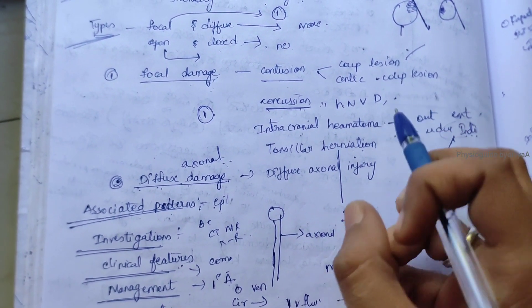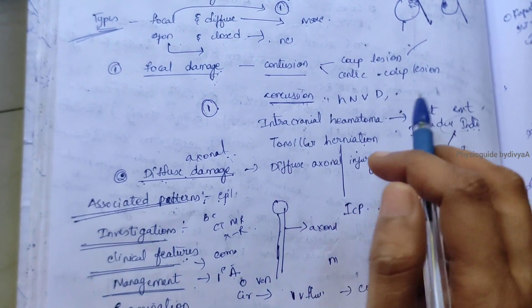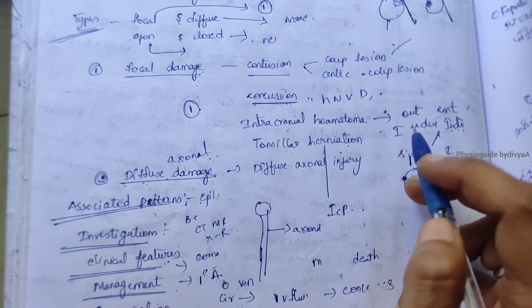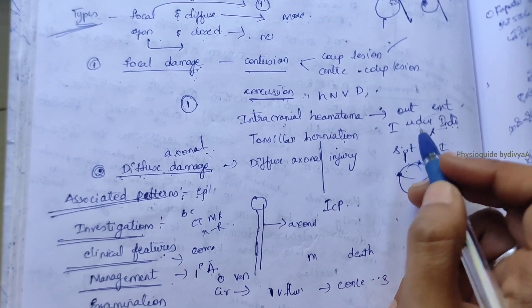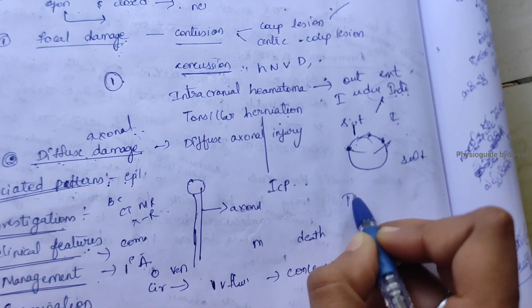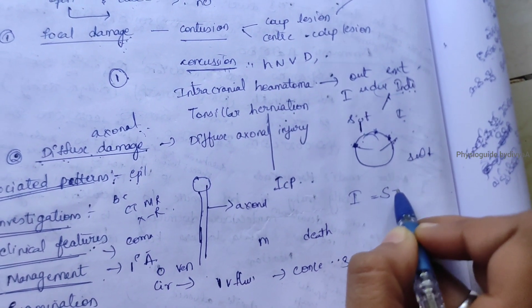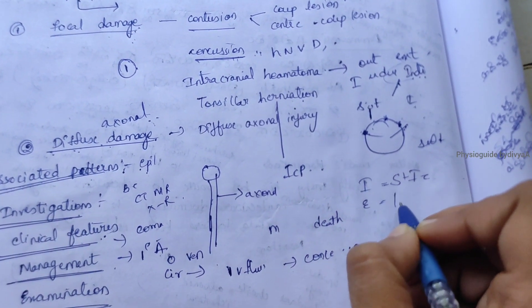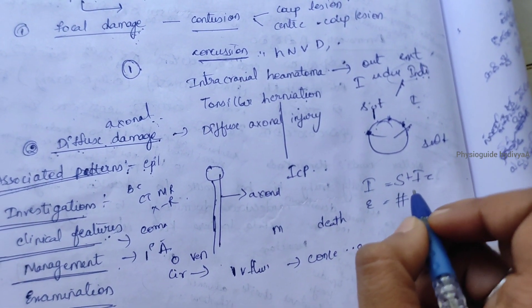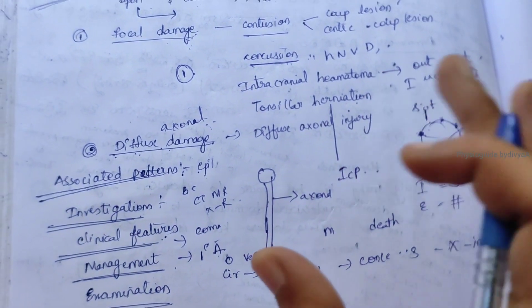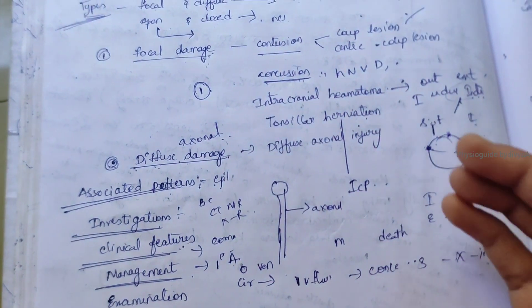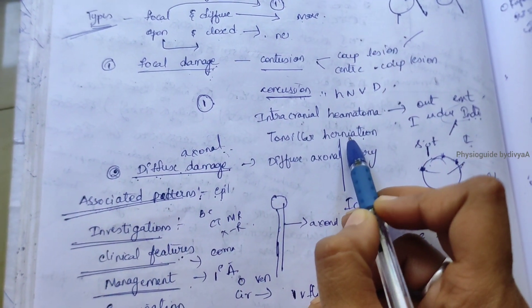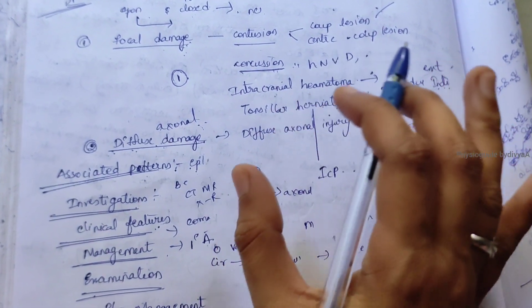Intracranial hematoma means bleeding inside the cranium. This may occur either extradural or intradural. Intradural lesions are a combination of subdural plus intracerebral. Extradural means skull fracture with tearing of the middle meningeal blood vessels, bleeding into the extradural space.